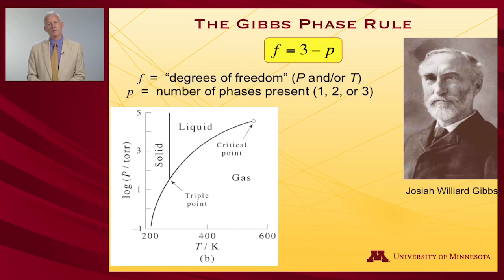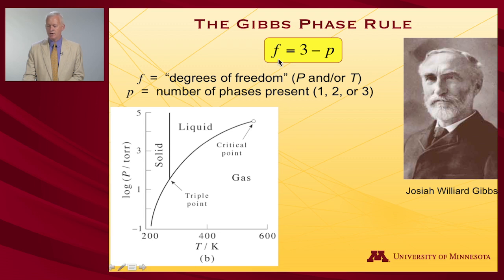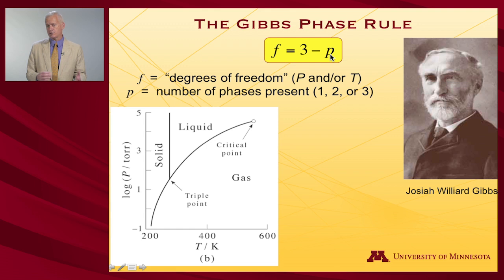Thinking about coexistence curves leads us to the Gibbs Phase Rule. The phase rule states that the number of degrees of freedom F equals 3 minus the number of phases present, where the degrees of freedom can be pressure and/or temperature. For a single phase — solid, liquid, or gas — F = 3 − 1 = 2, meaning you can independently vary both pressure and temperature. At the triple point, all three phases are present, so F = 0: there are no degrees of freedom; that unique pressure and temperature are fixed by the substance.